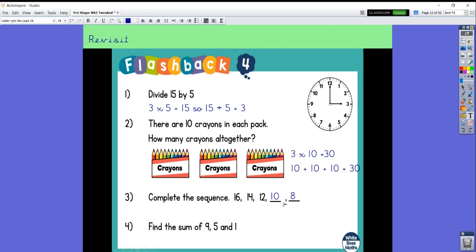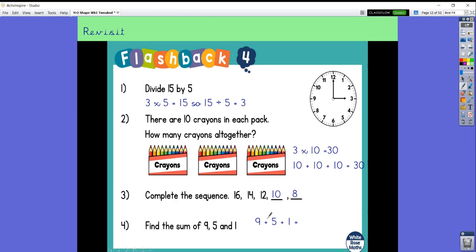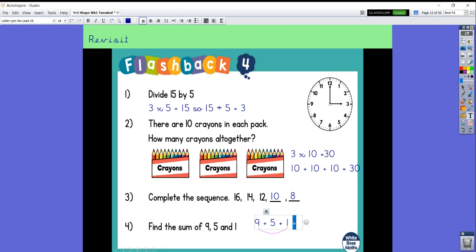Our last question says find the sum of 9, 5 and 1. The sum means we are going to be adding 9 with 5 and 1. I have noticed, and this is a really good little trick to learn, that 9 add 1 makes 10, which is our number bond to 10. And then 10 and 5 more gives us 15.